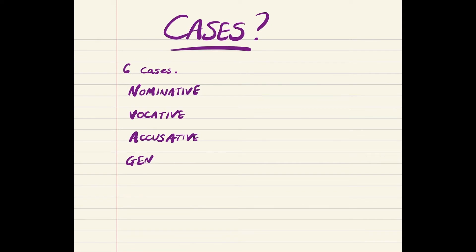So, what do we mean by cases? There are six different cases in Latin, and each of them tell you the function of the noun in the sentence. So, let's go over the six different cases that you can have. You have your nominative, your vocative, your accusative, your genitive, your dative, and then your ablative.